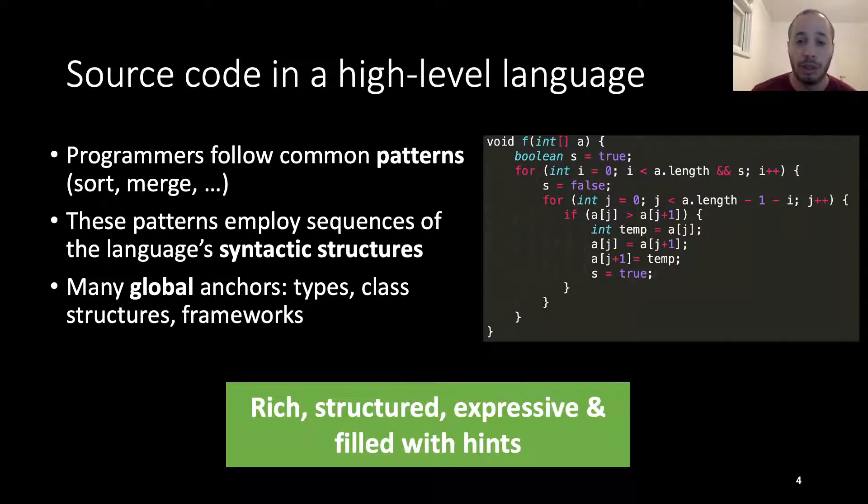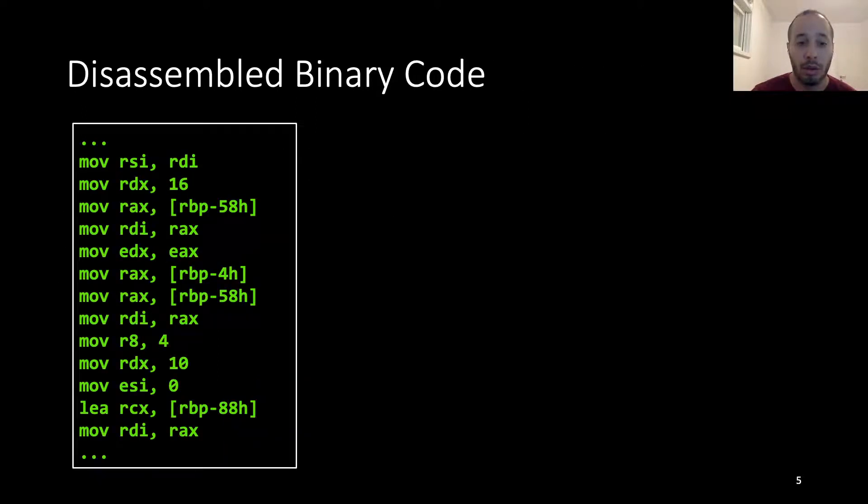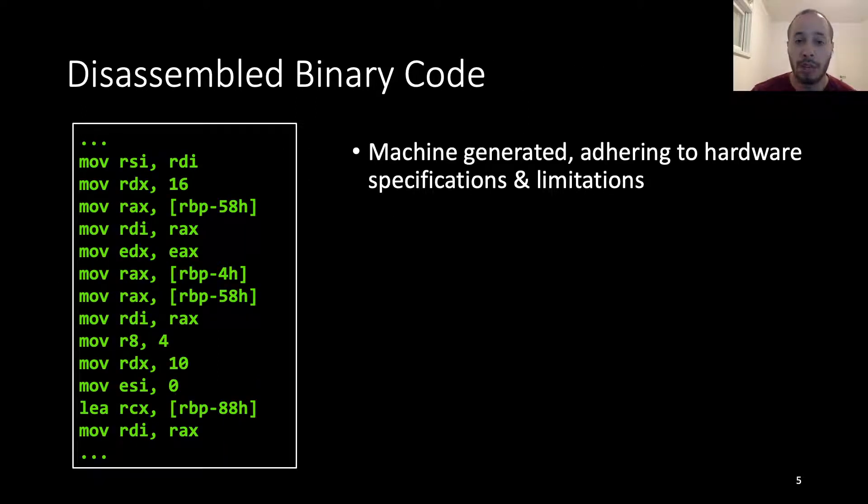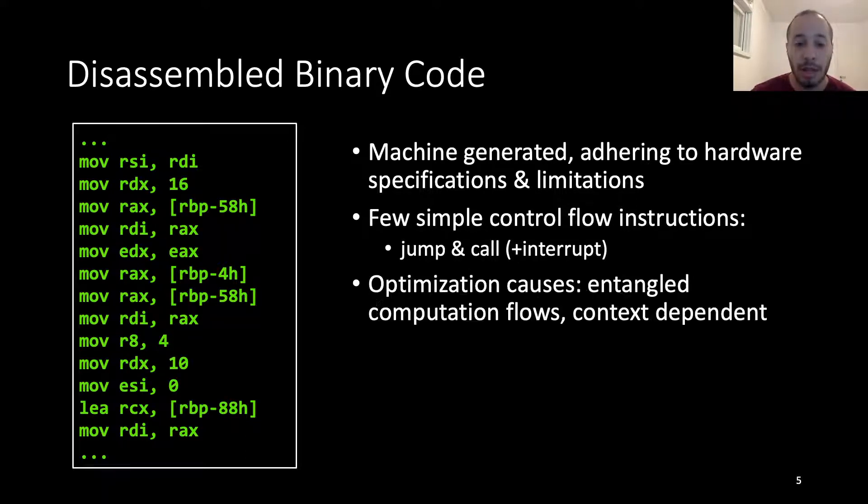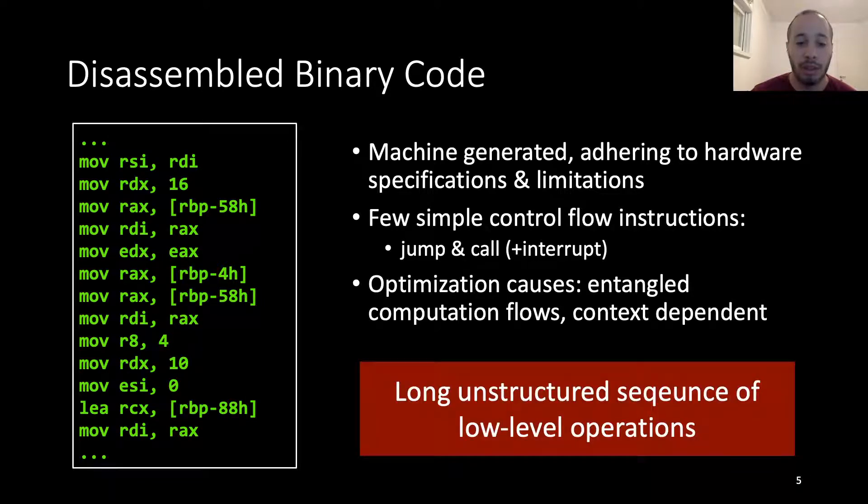On the other hand, disassembled binary code is machine generated, adhering to hardware specifications and limitations, has few simple control flow instructions, specifically jump and call and sometimes interrupts, and is usually optimized, causing entanglement in computation flows and generating code according to the execution context. This means that the same semantics will syntactically be expressed in many different ways. In essence, disassembled binary code is a long unstructured sequence of low-level operations.